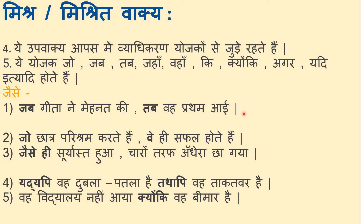Examples of mishrit vaakya: Jab geetha ne mehnat ki, tab vah prathama aayi — when Geetha worked hard, she became first. Those students who work hard, they become successful. As soon as the sun set, it became dark in all four directions. Even though he is thin, he is strong. He did not come to school because he is sick.